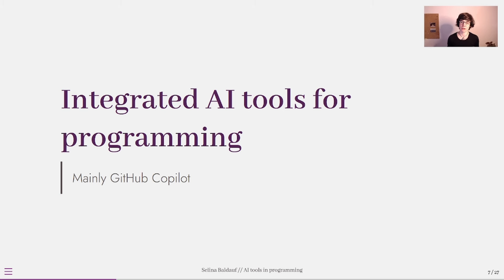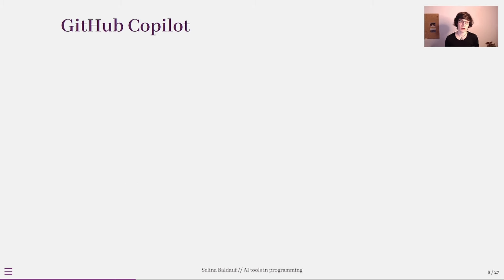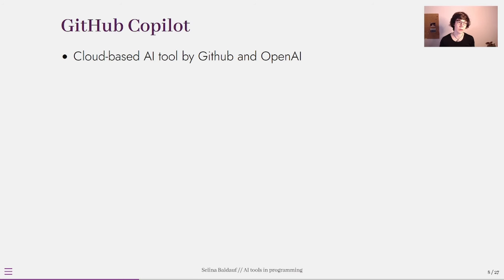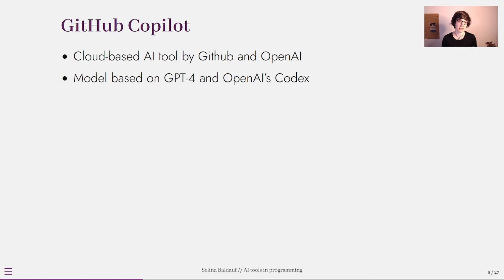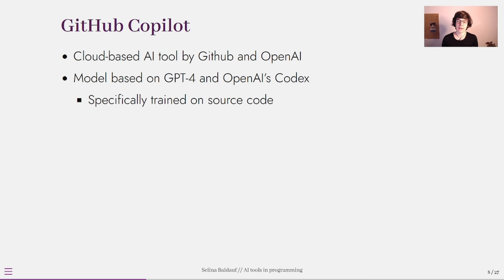Let's jump into integrated AI tools for programming, mainly GitHub Copilot. GitHub Copilot is a cloud-based AI tool developed by GitHub and OpenAI — the company behind ChatGPT. The newest version is based on GPT-4, the newest large language model by OpenAI, and OpenAI's Codex. GitHub Copilot is specifically trained on publicly available source code, and the basic idea is that you extend your IDE and integrate Copilot into it.